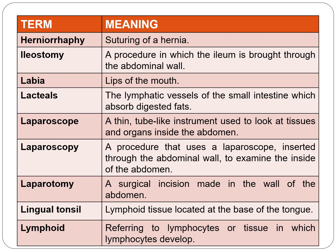Herniorrhaphy is suturing of a hernia. Ileostomy is a procedure in which the ileum is brought through the abdominal wall. Labia indicates the lips of the mouth. Lacteals are lymphatic vessels of the small intestine that absorb digested fats. A laparoscope — 'laparo' means abdomen — is a thin tube-like instrument used to look at tissues or organs inside the abdomen, whereas laparoscopy is a procedure that uses a laparoscope inserted through the abdominal wall to examine the inside of the abdomen.